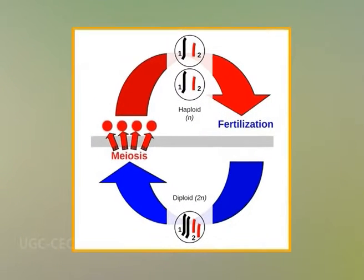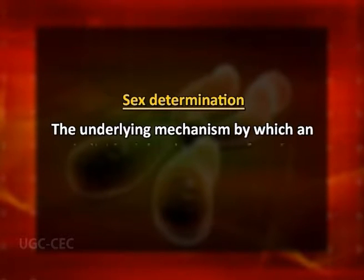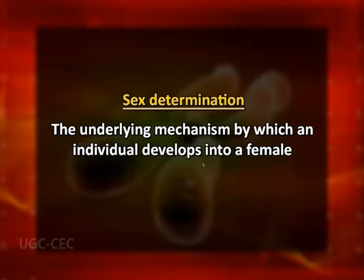Now we will start with sex determination. Within a population, sexual reproduction enhances genetic diversity because the genetic material of offspring comes from two sources. For most species of animals and some species of plants, sexual reproduction is carried out by individuals of the opposite sex, i.e., females and males. The underlying mechanism by which an individual develops into a female or a male is called sex determination.